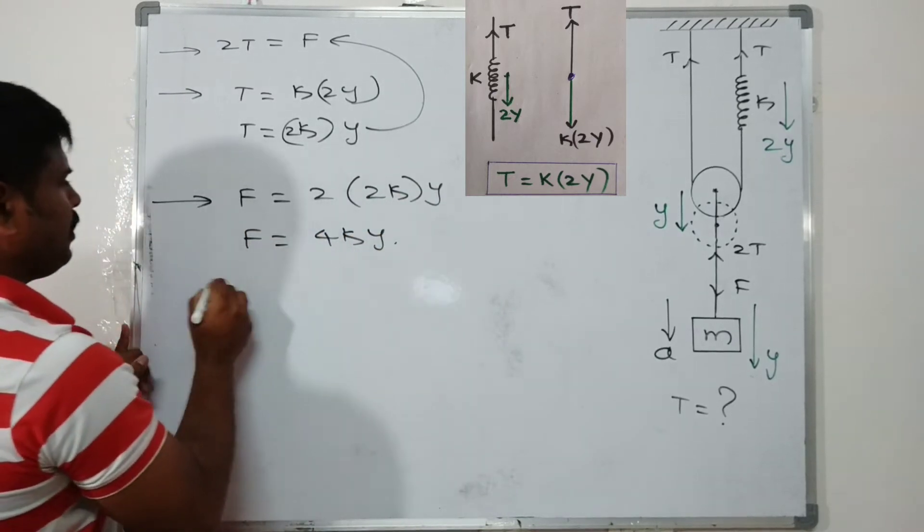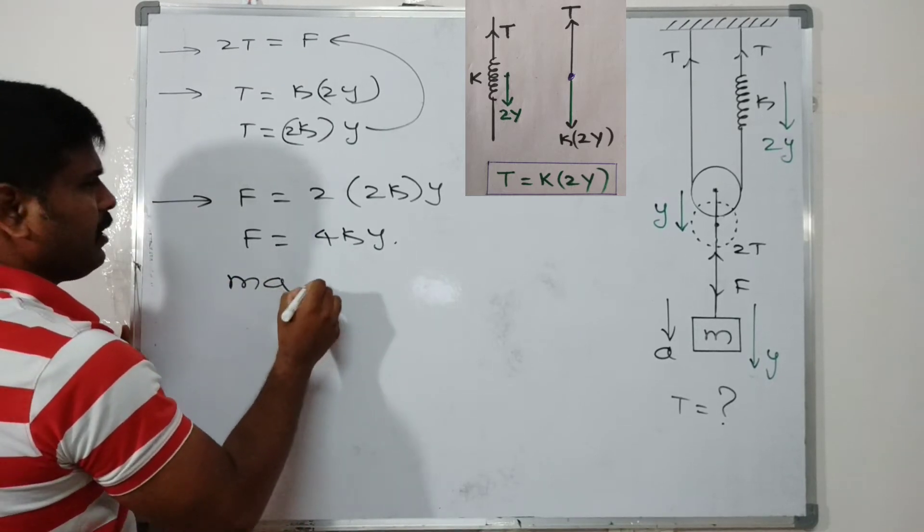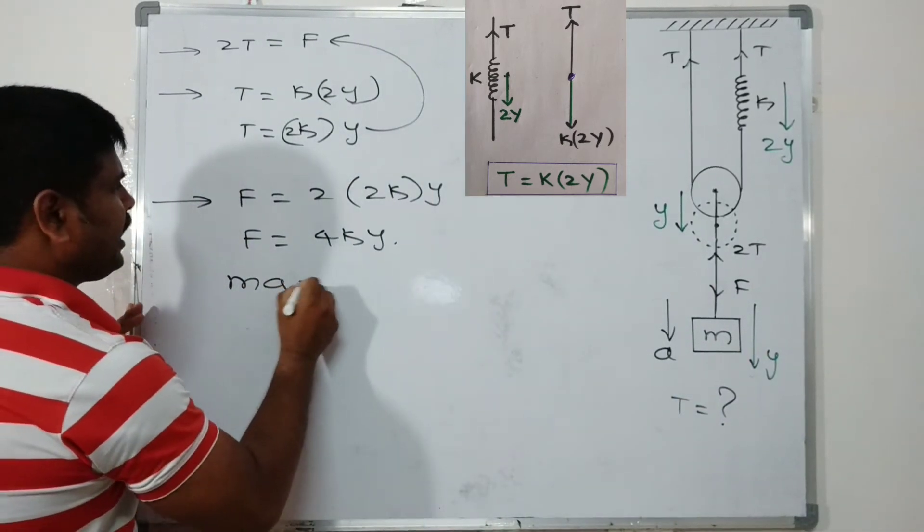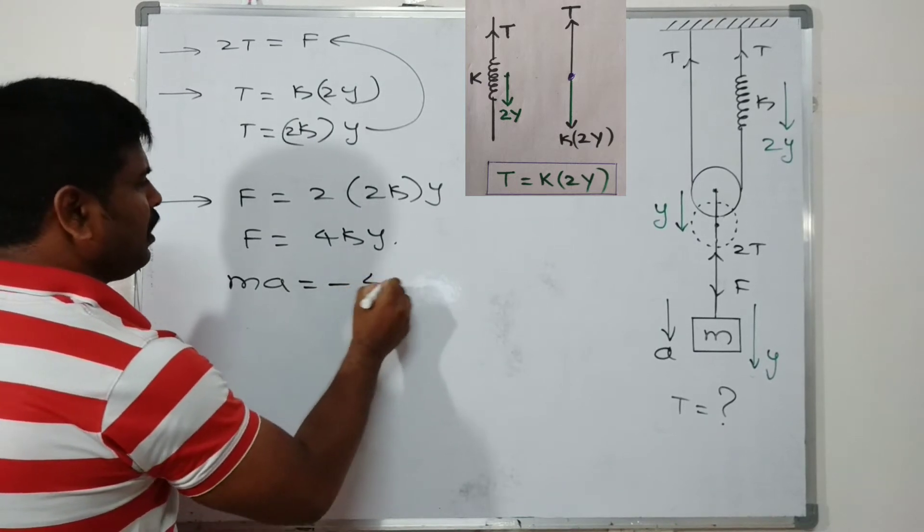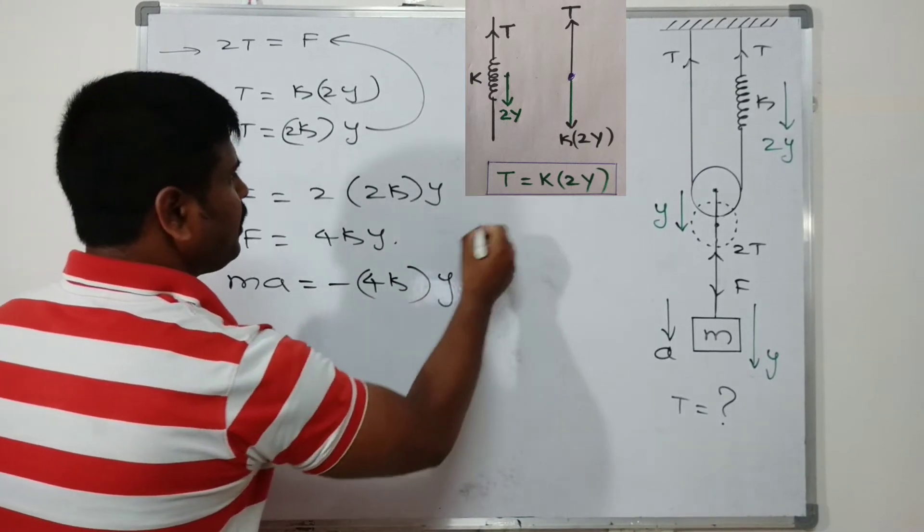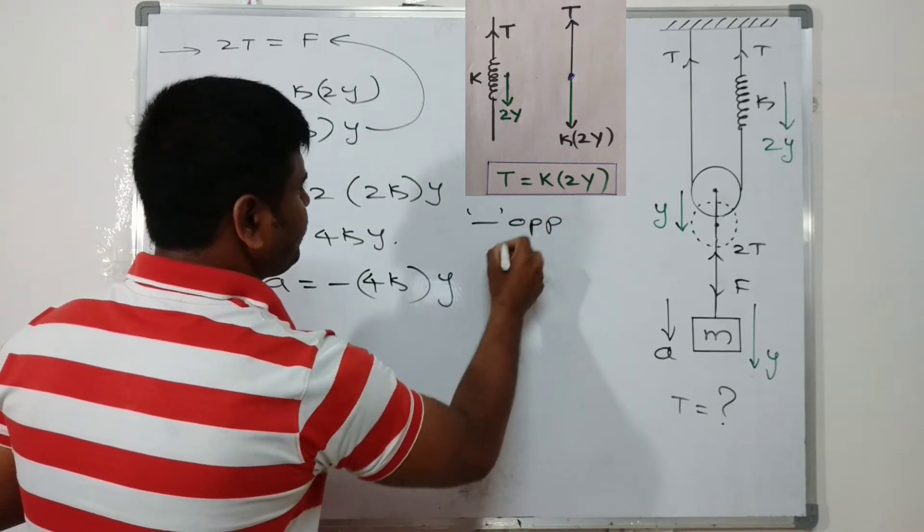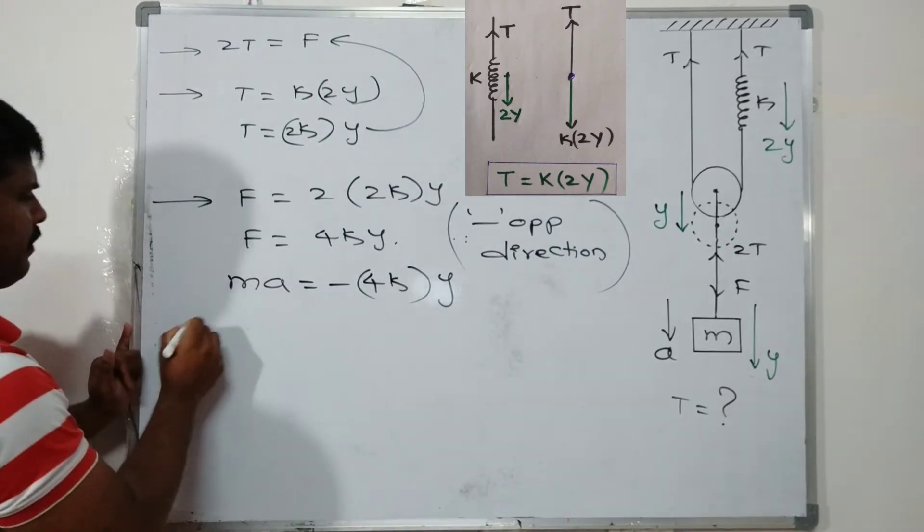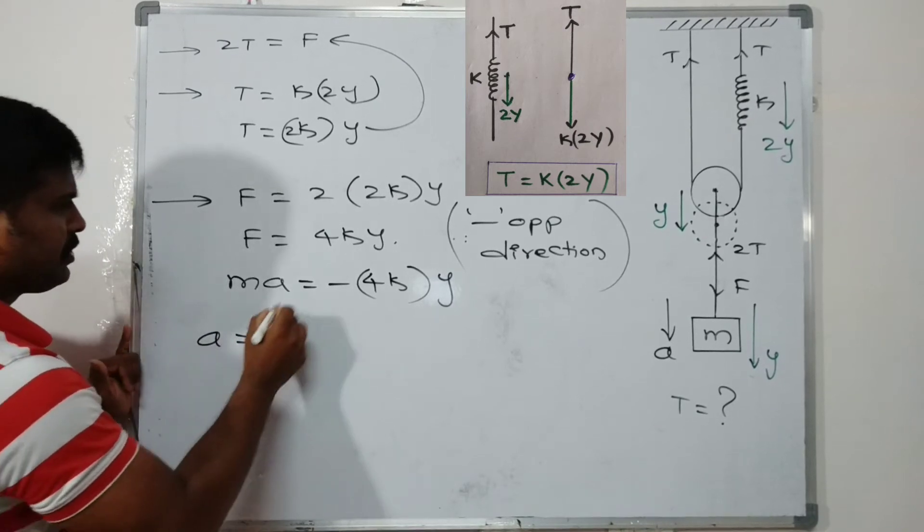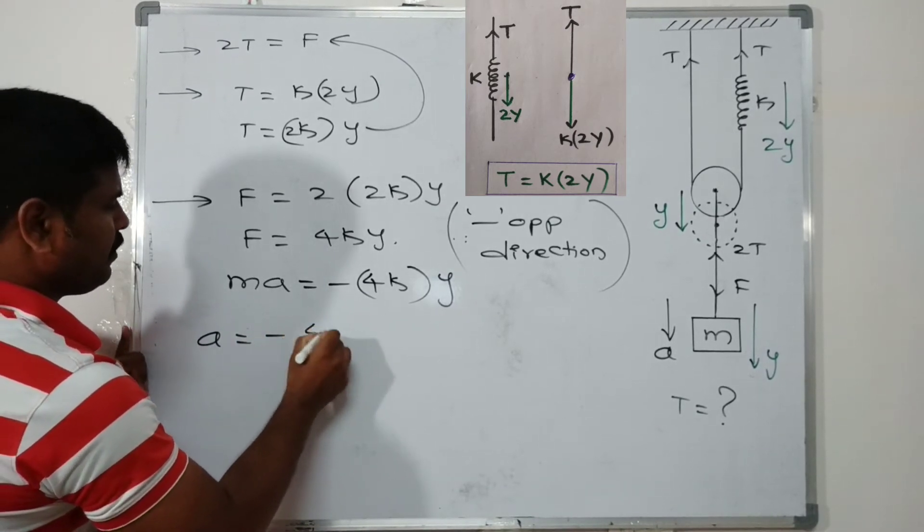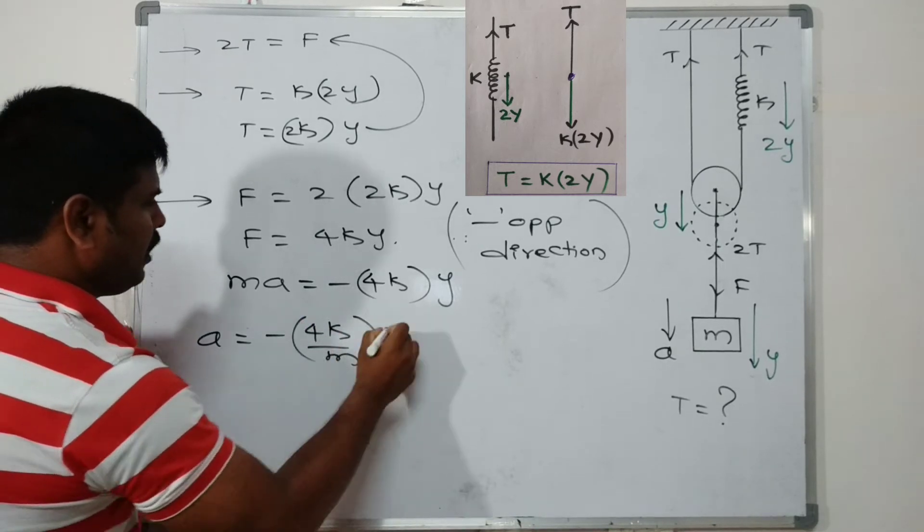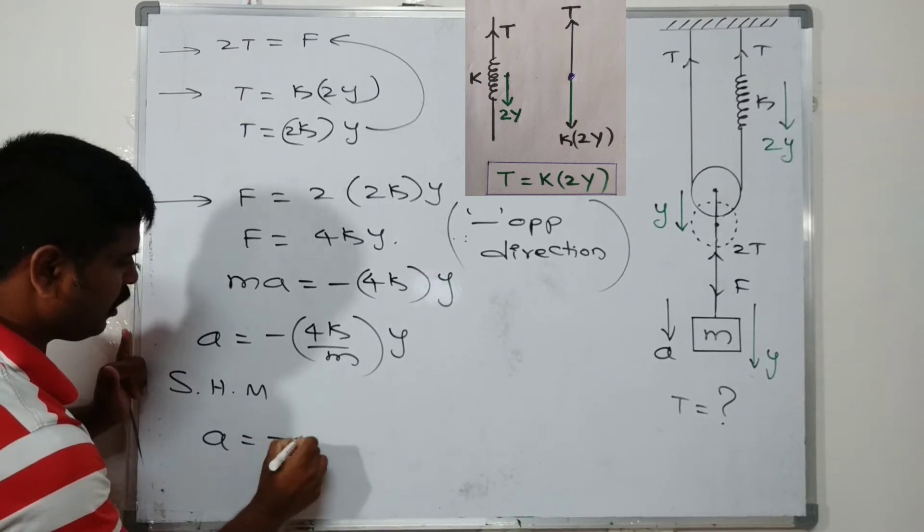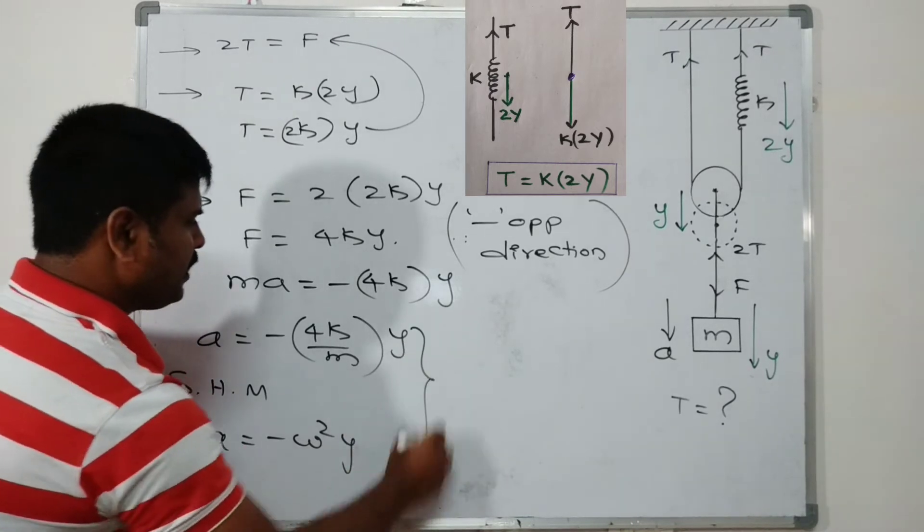Here F = ma, where mass is moving with acceleration a. Resultant force is F = -4ky, where minus represents opposite direction. Now from simple harmonic motion, acceleration a = -(4k/m)y. From SHM, a = -ω²y. From this combination we get ω = √(4k/m).